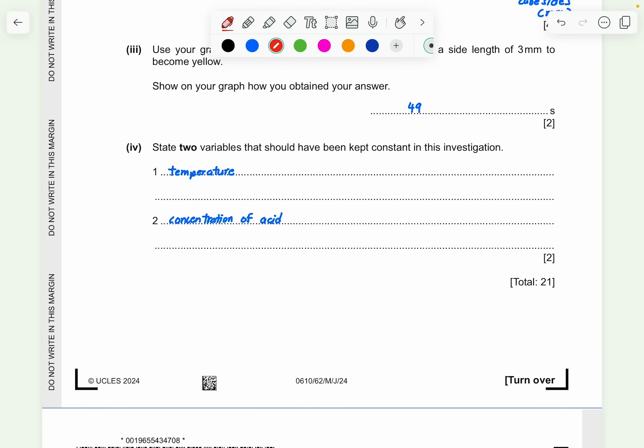And state 2 variables that would have been kept constant in this investigation. So there is a ton of answers for this. We have temperature, concentration of acid, volume of acid, type of acid, type of agar, concentration of agar, concentration of the indicator, and the volume of indicator, type of indicator. These are all constant variables that have to make sure that it's the same throughout the course of this investigation.